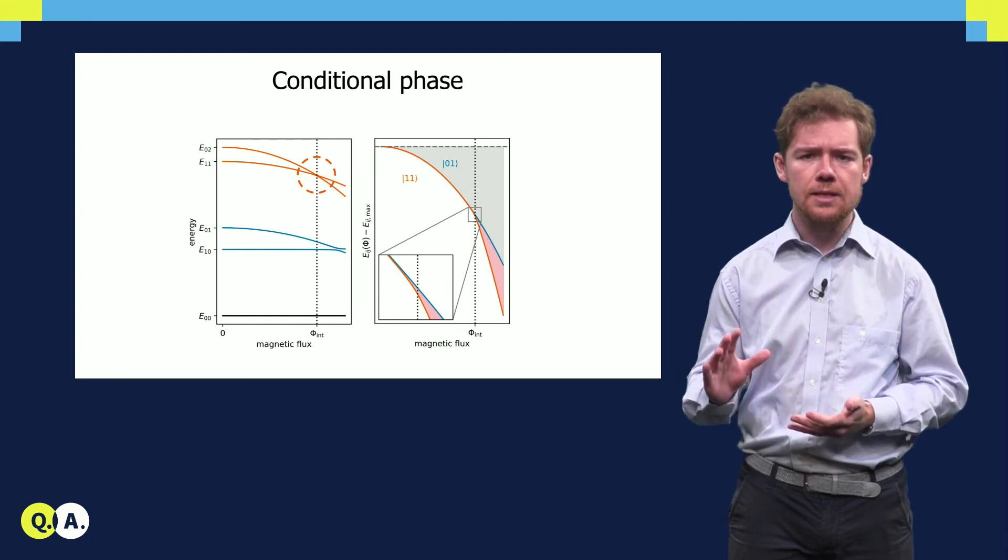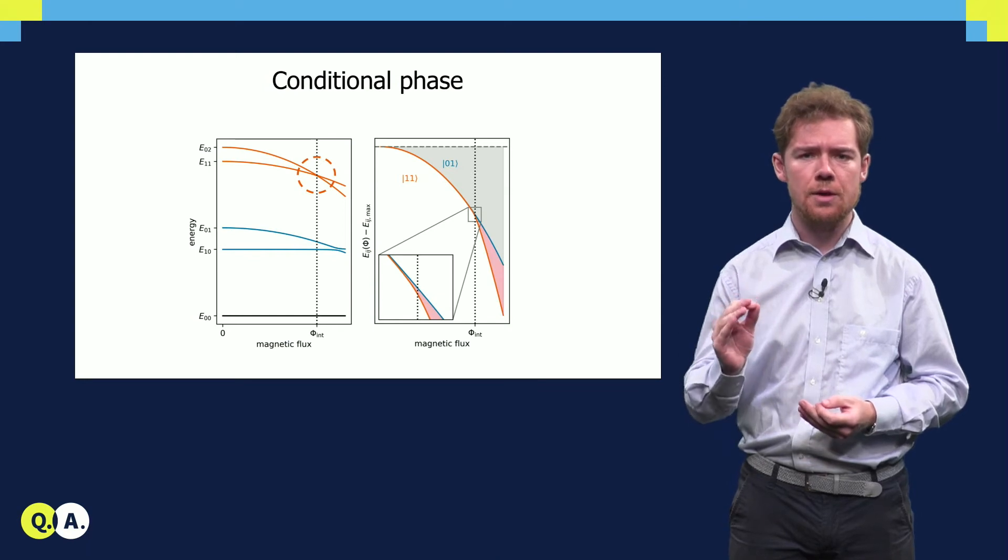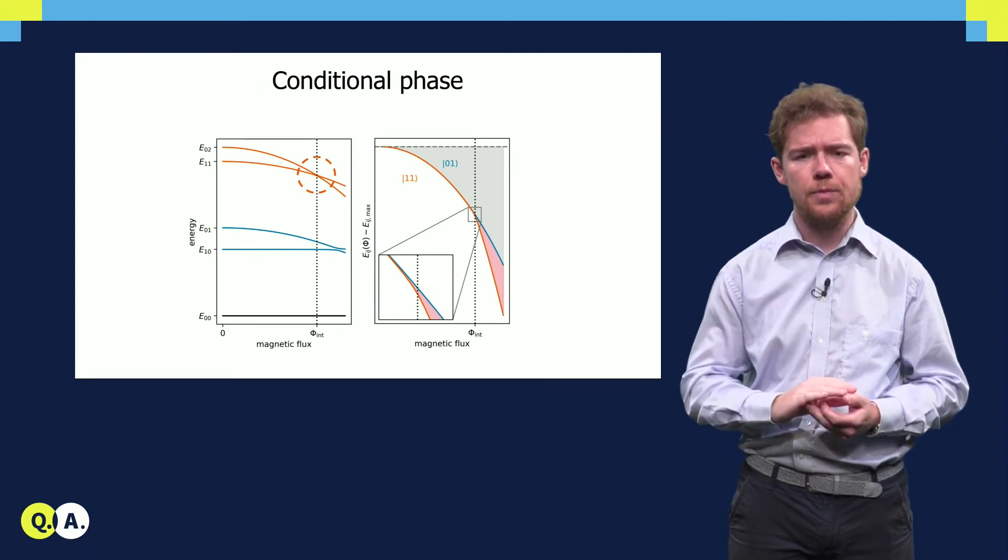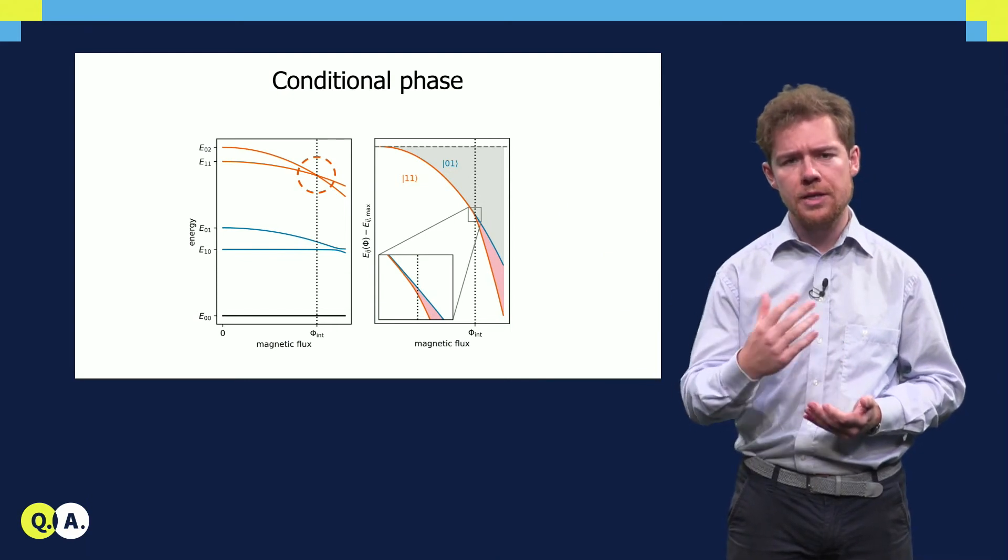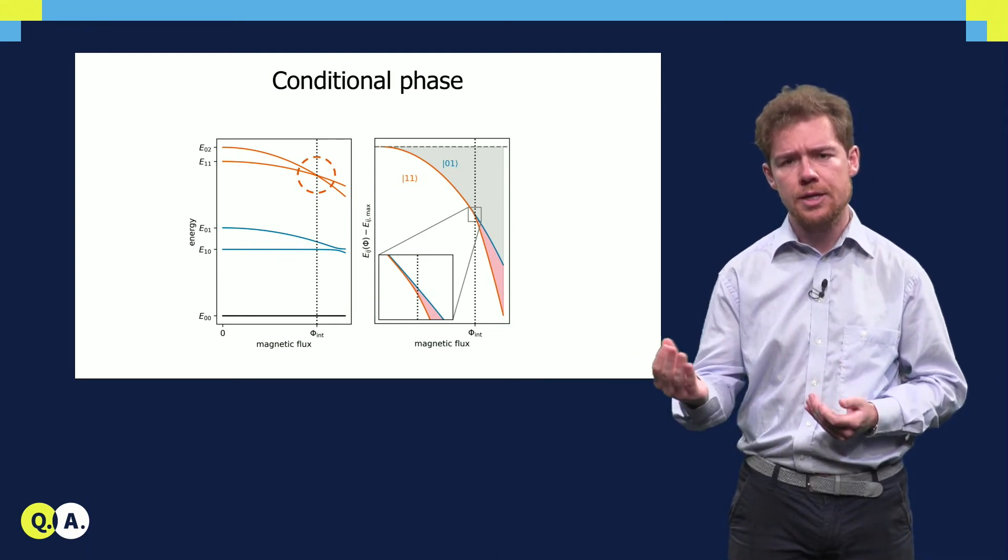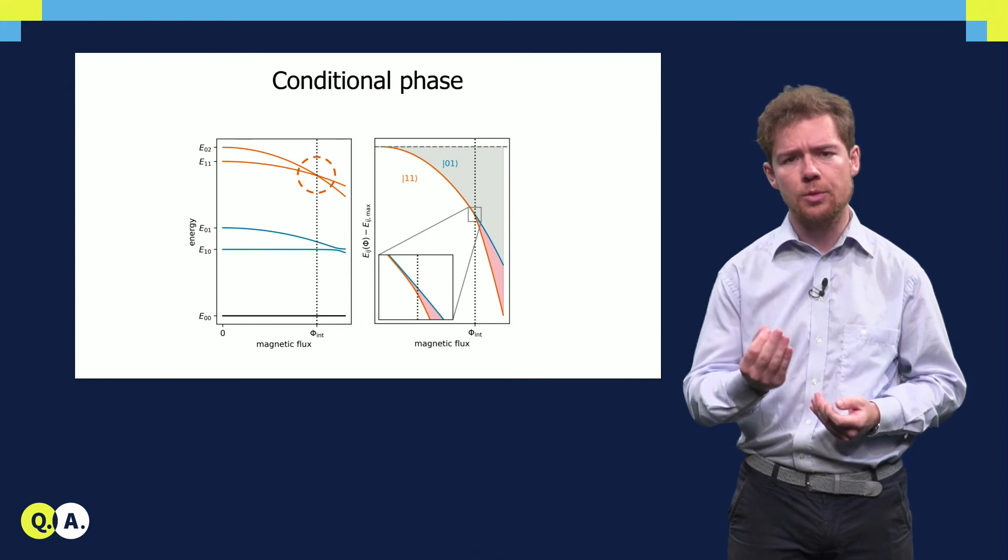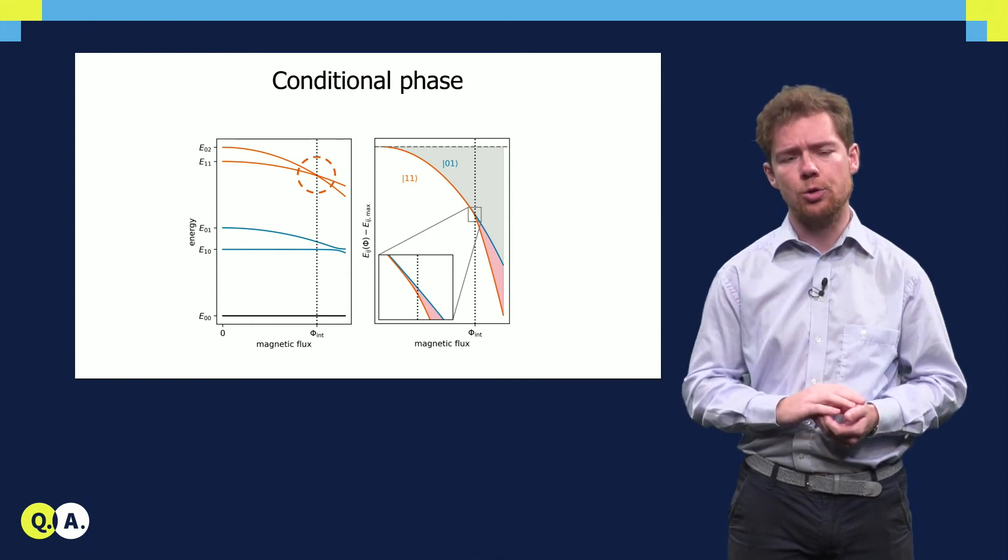it can be seen that the detuning of the target qubit is different based on the state of the control qubit. This difference is marked in red over here. By detuning the qubit into the red region, it is possible to make the target qubit acquire a phase conditional on the state of control qubit.